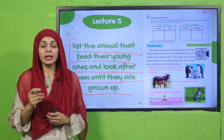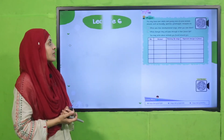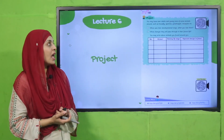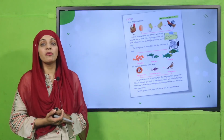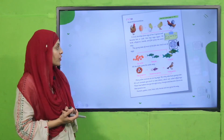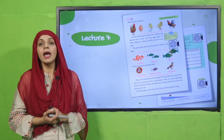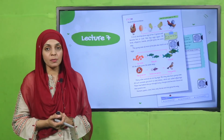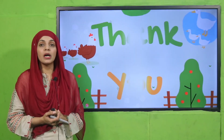In lecture number six, the students will do a project, and then we will move forward towards lecture number seven, which will be the review of the chapter. In this review, we will go over all the SLOs and reading pages, and by the end I will provide you with an assessment sheet to test you.